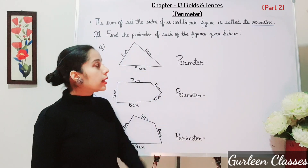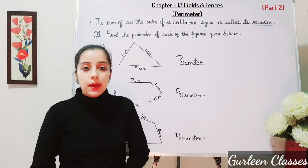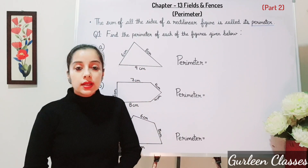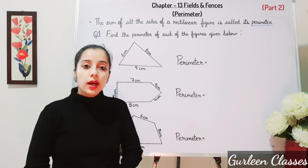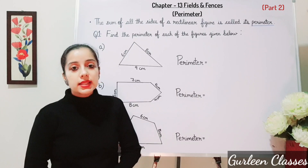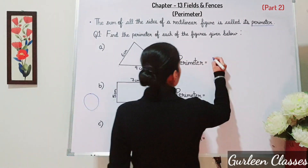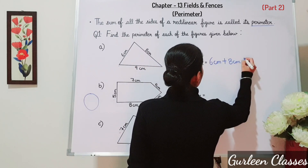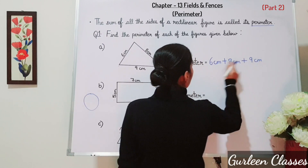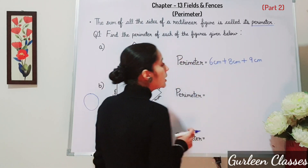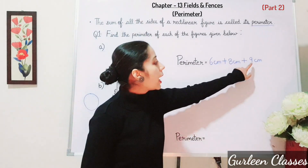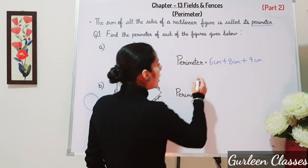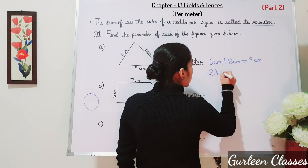Now let us do question number 1: find the perimeter of each of the figures given below. Part A — here you can see one triangle is given and the sides are written on the boundary. The length of the boundary or length of the outline is called perimeter. So here 6 cm plus 8 cm plus 9 cm. 9 plus 8 is 17, plus 6 is 23. So the perimeter is 23 centimetres.